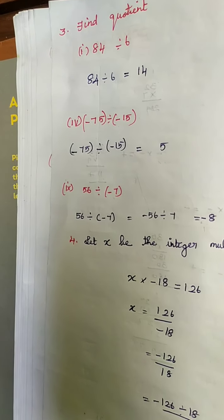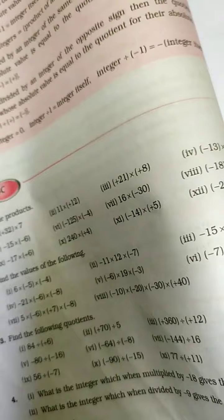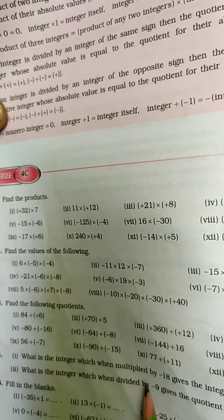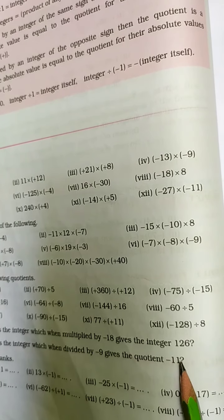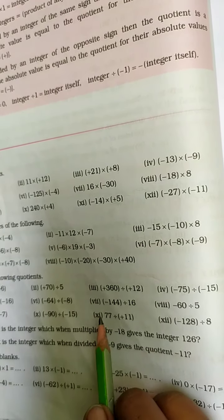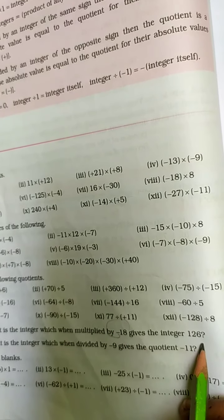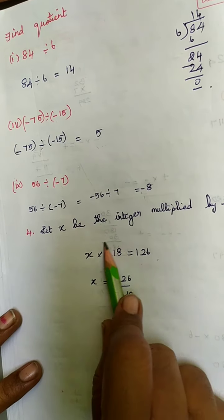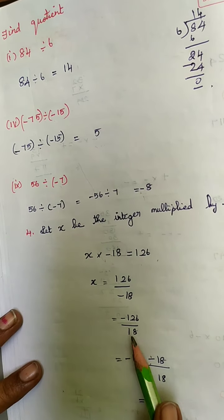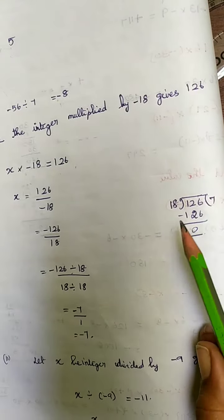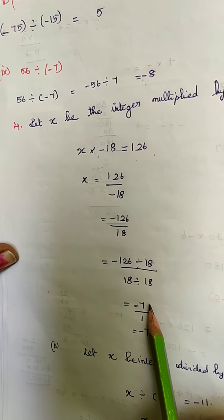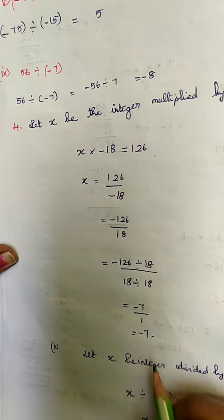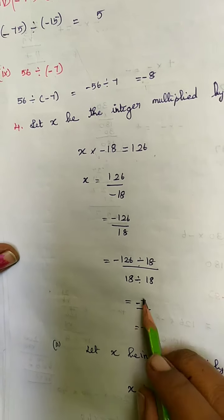Problem number 4: What is the integer when multiplied by minus 18 gives 126? Taking that number as x: x multiplied by minus 18 equals 126. Multiplication crosses the equal sign to become division. The minus is in the denominator so we take it to the numerator. Dividing 126 by 18 gives 7. Since the minus is in the numerator, the answer is minus 7.